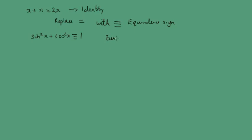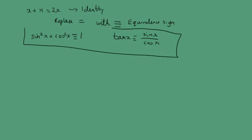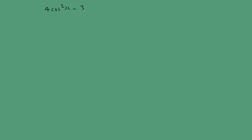And tan x is equivalent to sine x over cosine x. We can use these to play around with lots of other trigonometric expressions and rearrange them to create some interesting identities. So let's do some of those now. First, let us consider 4 cosine squared x minus 3 sine squared x, and we want to express it in terms of cosine x.